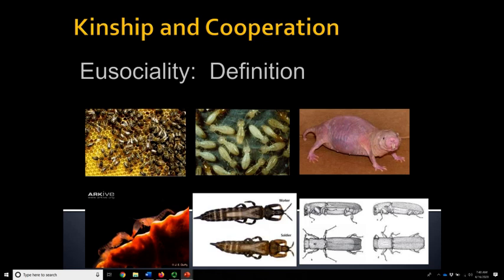Arthropods seem predisposed towards eusociality. Amongst the hymenoptera — which are the ants, bees, and wasps — there are multiple, multiple examples of eusociality. That led people to wonder: why is it so common among the ants, bees, and wasps? Once they understood their mode of reproduction, we actually understood why eusociality is so common in the hymenoptera.